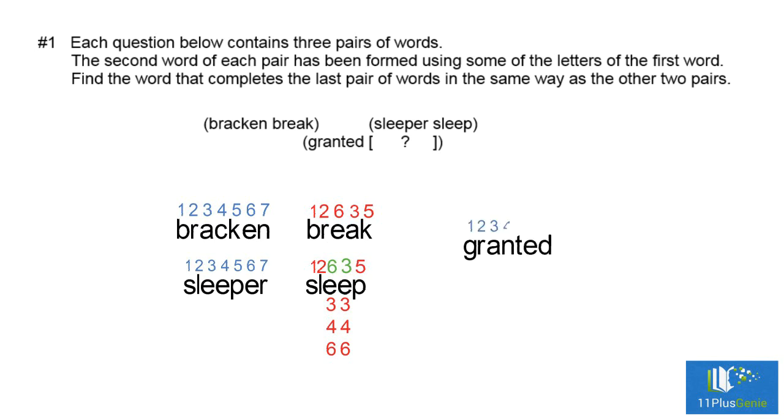We now apply this rule to the third group. Number one is G. Number two is R. Number six is E. Number three is A. And number five is T.